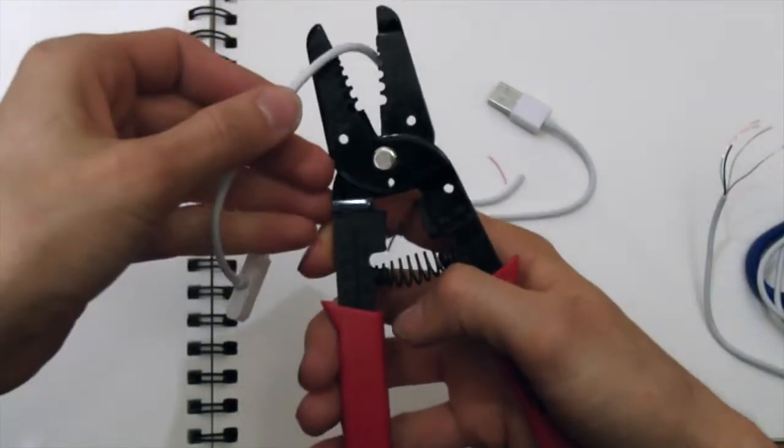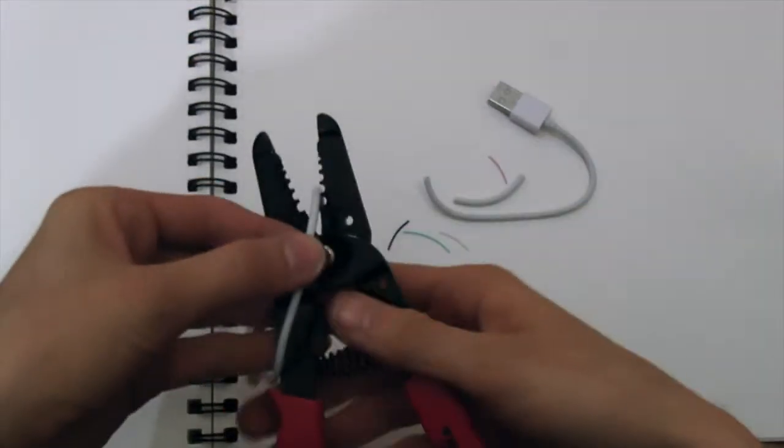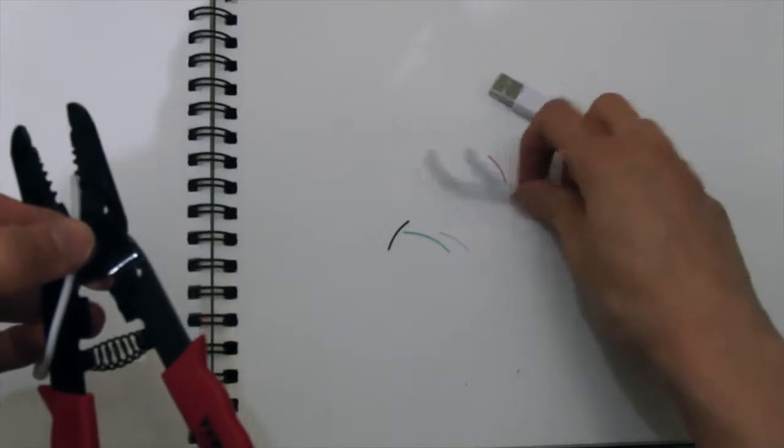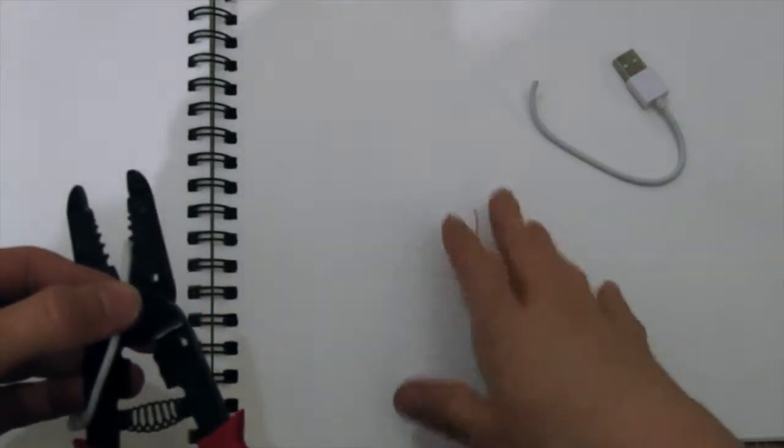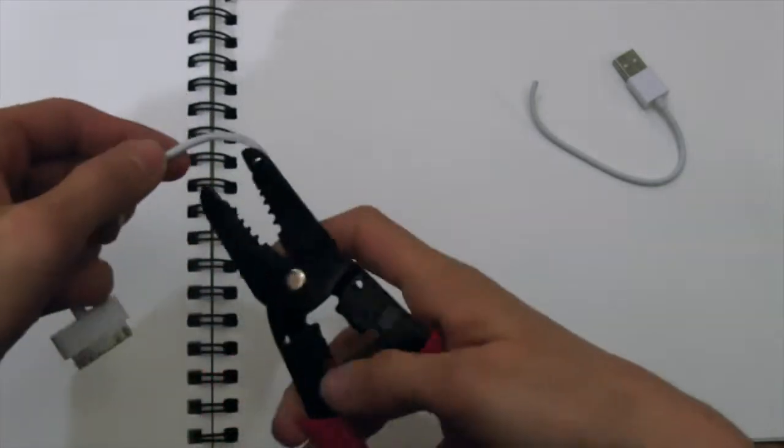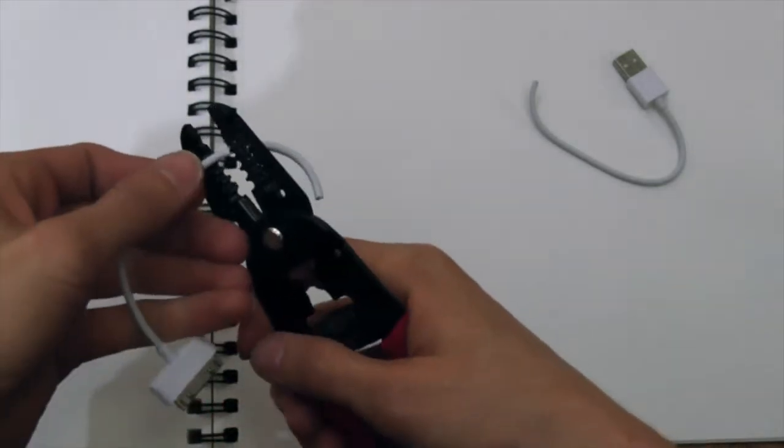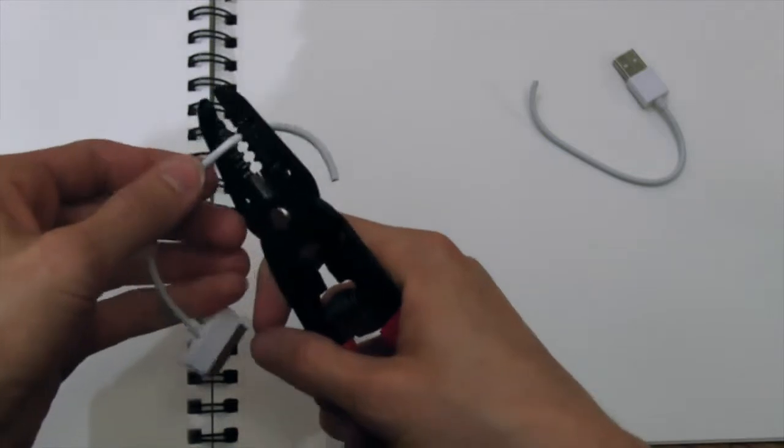When you feel like you've practiced enough, you can go ahead and move to the pieces, the cord end pieces that it talks about in the article. It's the same process that you start with, taking the casing off of the outside wire and then taking the casing off the inside wires.